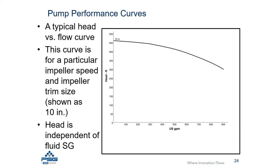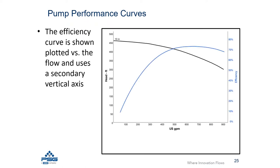In this particular case, you can see the 10-inch notation on the curve, which represents a 10-inch impeller. For this particular pump, it would operate along this line at a given speed or RPM.